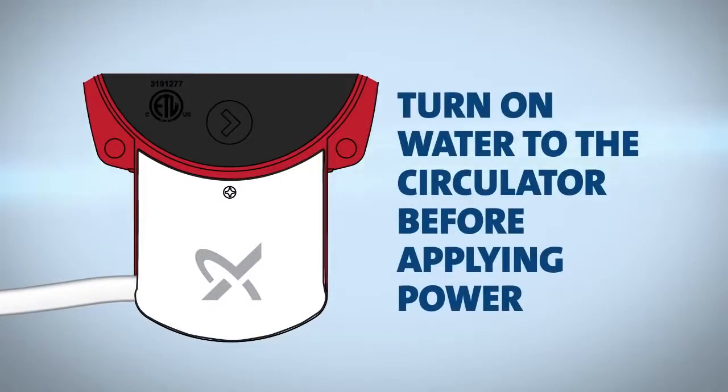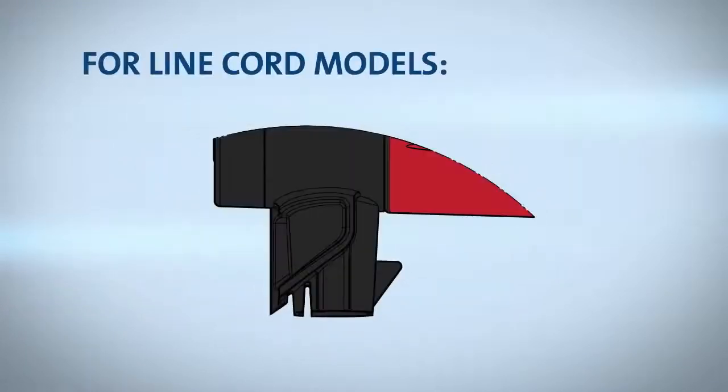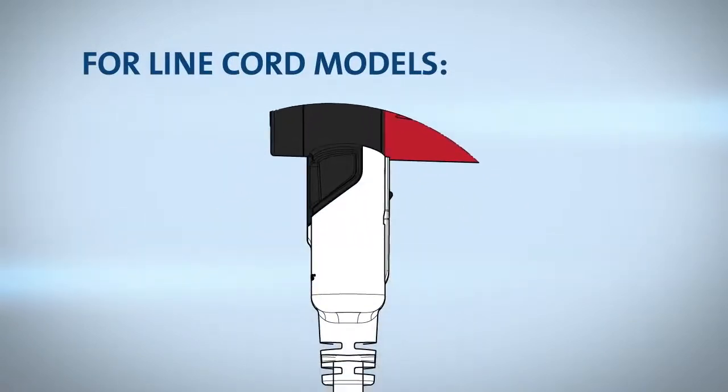Turn on water to the circulator before applying power. For line cord models, insert the line cord plug onto the pump. It's that simple.